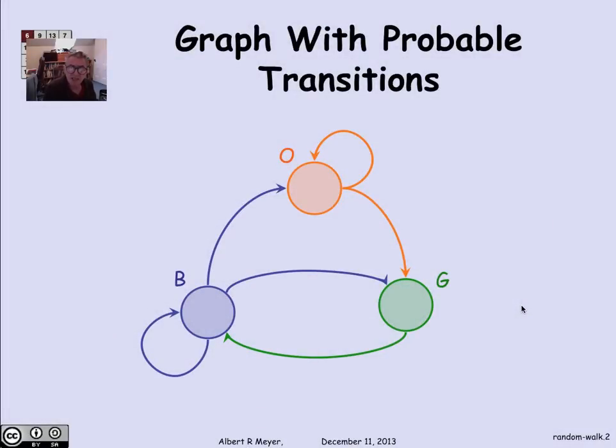The setup for a random walk is that you have a digraph, and we can also think and talk about the digraph as though it was a state diagram for a machine with states. So here's a three-state digraph: blue, orange, and green.